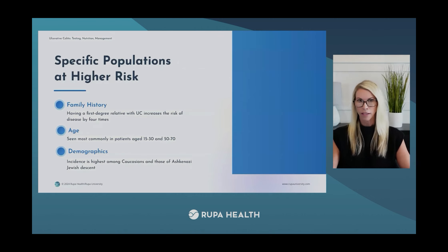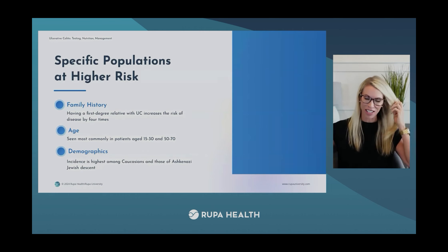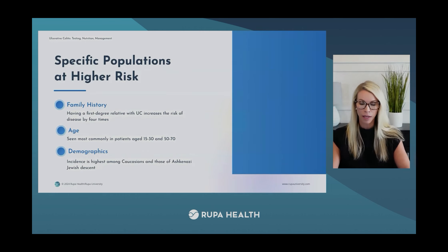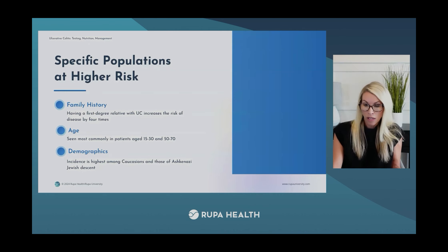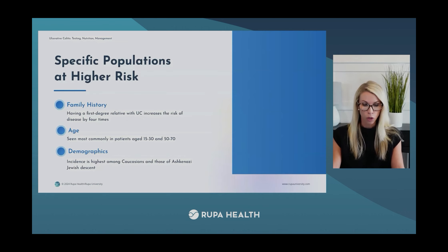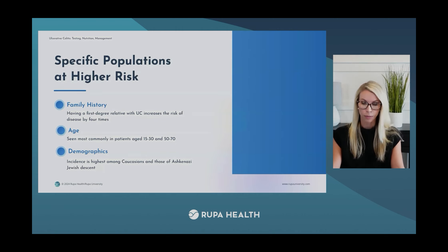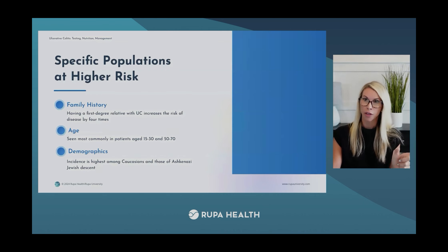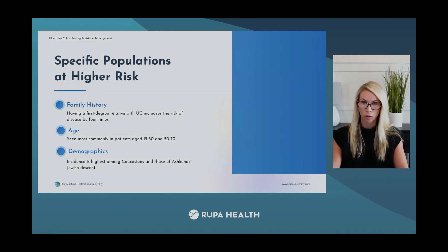UC is more common in certain populations. Family history is the most important independent risk factor — having a first-degree relative with UC increases risk by four times. It's most commonly diagnosed in patients 15 to 30 years of age, or later in the 50 to 70 age range. It's also more common in Caucasians and those of Ashkenazi Jewish descent.